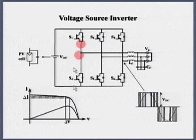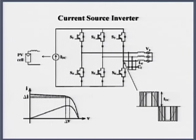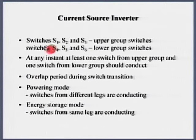Voltage source inverter at any given time, one device is on in each leg, whereas any one of the switches here and one other switches in the bottom. At any given time, only two devices are on during powering mode. During S1, S2, S3 upper switches, S4, S5, S6 are lower switch devices. At any instant, at least one switch from upper group and one switch from lower group should conduct. This is the powering mode.